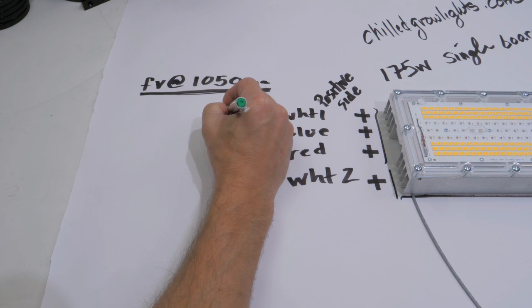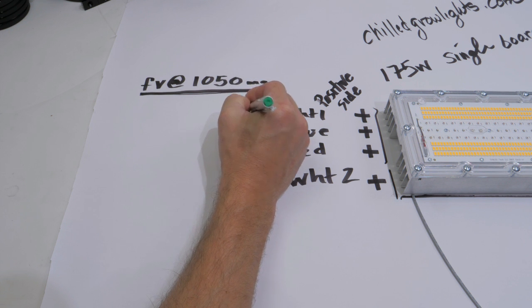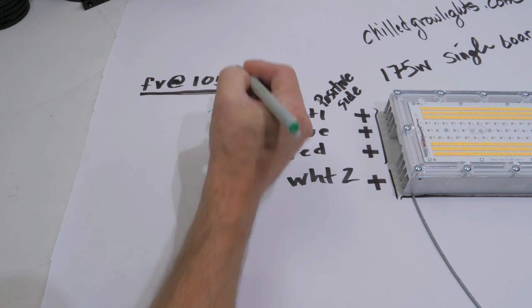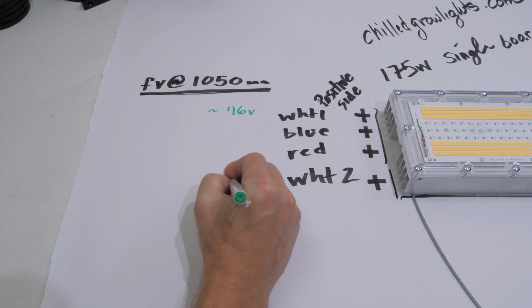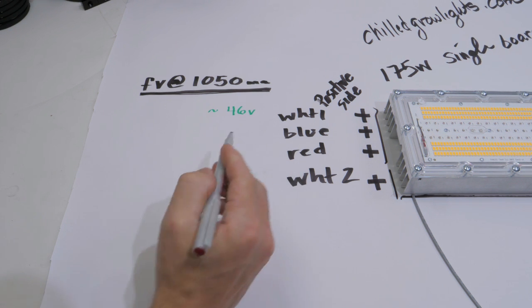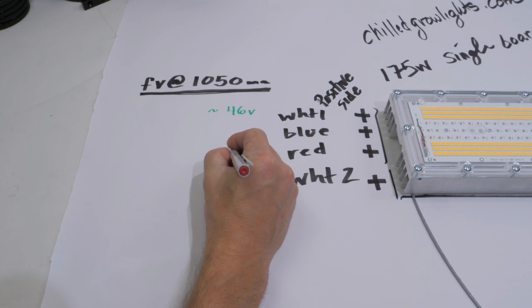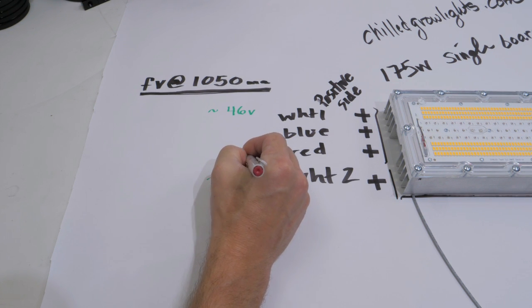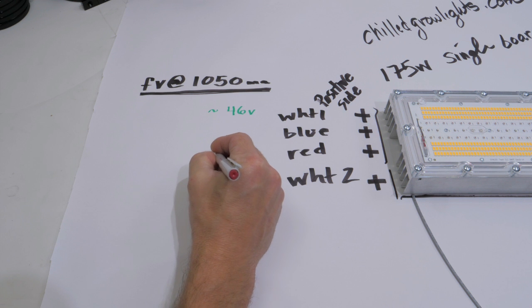The way Chilled is rolling out their commercial fixture line, the pre-assembled, they're rolling everything out at 1050 milliamps. That's how you get the 175 watts by going 1050. Now you can go 500, you can go 700, and I'll talk a little bit about that, but I don't want to make the video 30 minutes long.